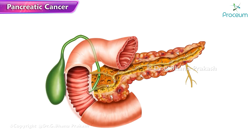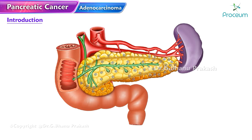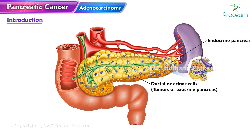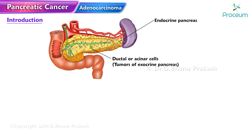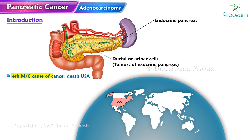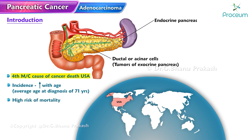Pancreatic cancer, or pancreatic carcinoma, usually refers to tumors of the exocrine pancreas — that is, the ductal or acinar cells. This contrasts with pancreatic neuroendocrine tumors, which occur in the endocrine cells. It is currently the fourth most common cause of cancer death in the United States. The incidence increases with age, with an average age at diagnosis of 71 years, and it is associated with a high risk of mortality.